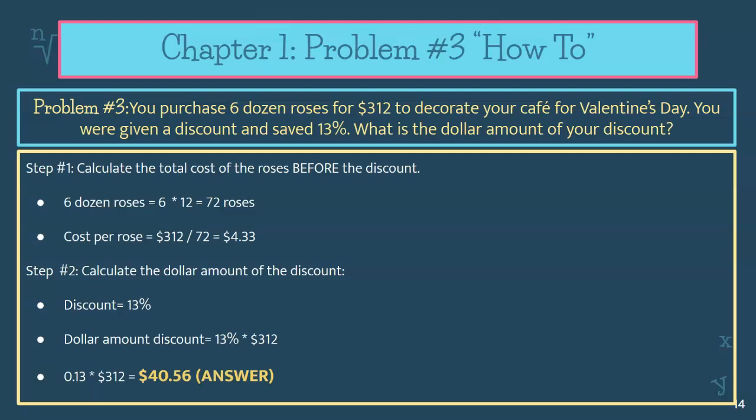Problem number three: you purchase six dozen roses for $312 to decorate your cafe for Valentine's Day. You were given a discount and saved 13%. What is the dollar amount of your discount? So to answer this, you're going to look at how to do the percentages, or you can follow along with me here. So step one: calculate the total cost of the roses before the discount.